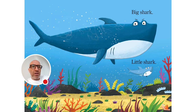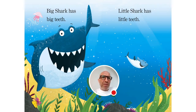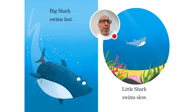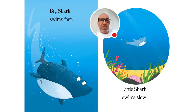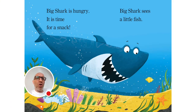Big Shark Little Shark. Big shark has big teeth and little shark has little teeth. Big shark swims fast, little shark swims slow. Big shark is hungry — it is time for a snack. Big shark sees a little fish.